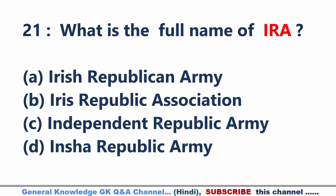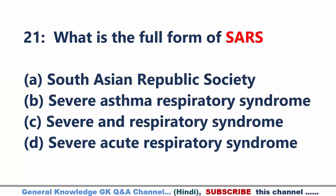What is the full name of IRA? Answer A: Irish Republican Army. What is the full form of SARS? Answer D: Severe Acute Respiratory Syndrome.